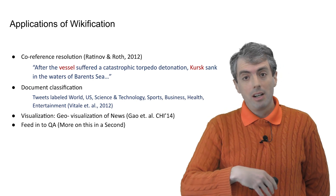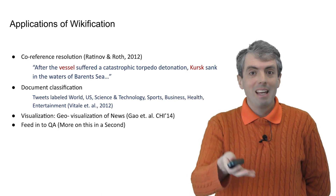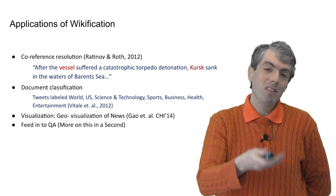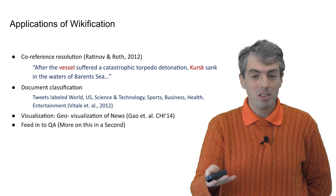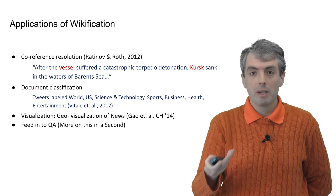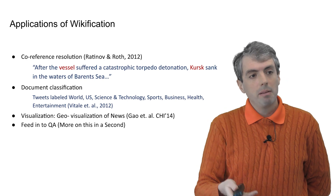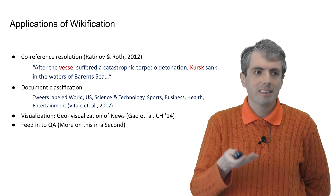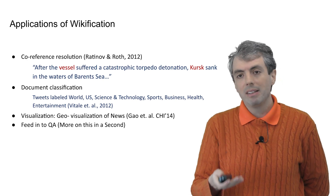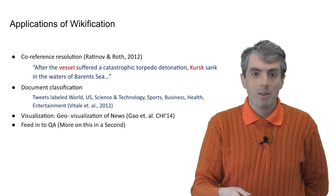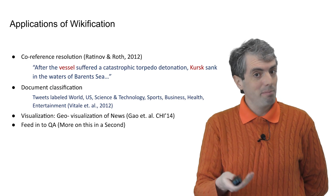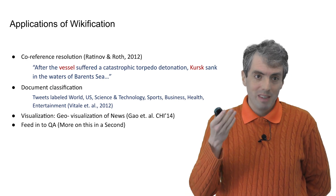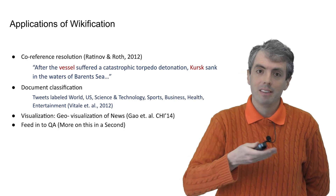We've already talked about co-reference, and co-reference can be helped by, in addition to detecting entity mentions, also linking those entity mentions to the appropriate Wikipedia page. For example, in this sentence: after the vessel suffered a catastrophic torpedo detonation, Kursk sank in the waters off the Barents Sea. If you know that the Kursk is a submarine — i.e., a kind of vessel — you'll be able to figure out that Kursk and vessel are co-referent.